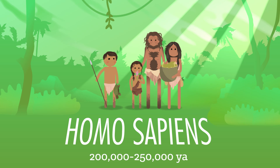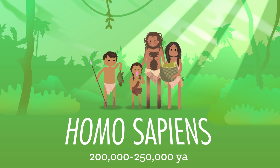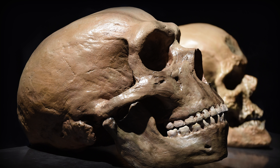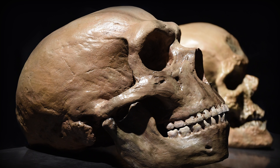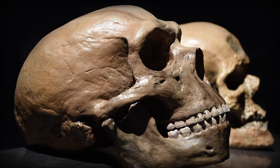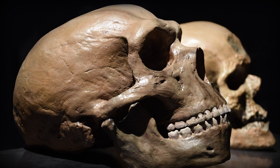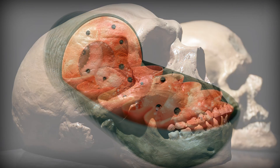Our species, Homo sapiens, came into existence approximately 200 to 250,000 years ago, foraging for generations in East Africa. These early humans were a very small population with fairly limited genetic diversity.